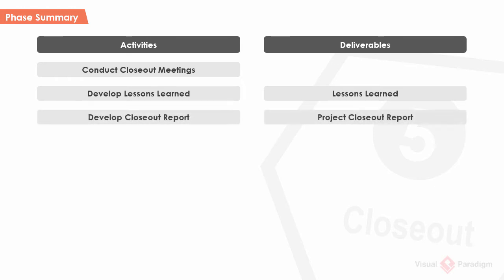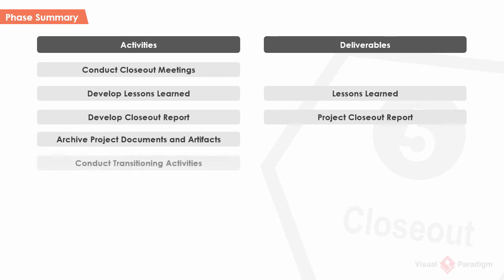A closeout report is developed to document the variances from the baseline plan. It is important to ensure that all project documents are properly stored for future access. This phase ends by having the deliverables transferred to the operation staff, marking the end of the project in the IT project management lifecycle. The project team will then disperse.